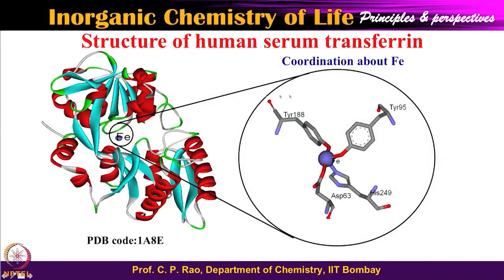Now let us look at the same concept with an example — this protein is transferrin. Transferrin transports iron ions across the blood from one organ to another. You have an iron center covered by the protein, and if you expand this region, you can see the metal ion center which is iron, connected to a phenolic oxygen and another phenolic oxygen — these come from the amino acid tyrosine. The tyrosine gives you a phenolic group which, upon deprotonation, becomes phenolate and binds to the iron center.